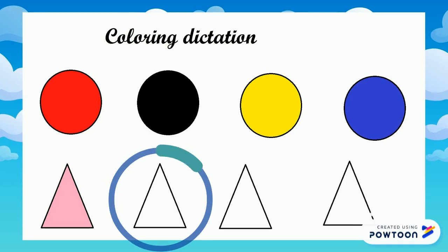Now let's look at triangle number 2. Color triangle number 2 brown. Triangle number 2 is brown. Good job.